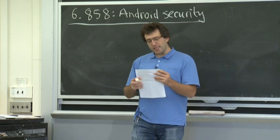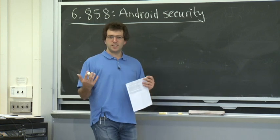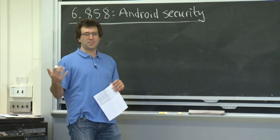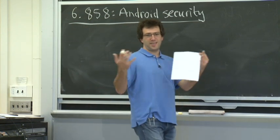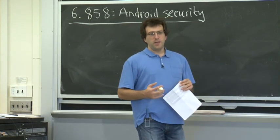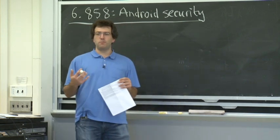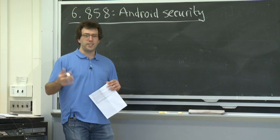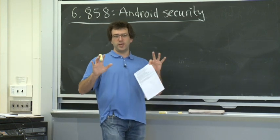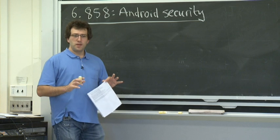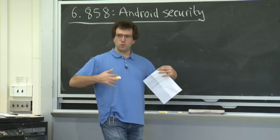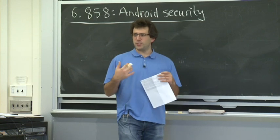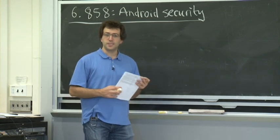Android also uses existing systems we've talked about. Android is built on top of Unix — it's just a Linux kernel running underneath the entire phone. They use familiar mechanisms like Unix user IDs and groups to separate applications from one another. But in Android's case, they have a very different way of setting up user IDs and file permissions than in a typical Linux system.